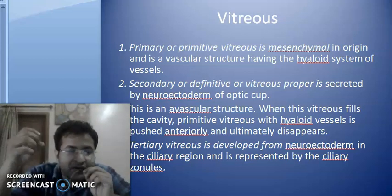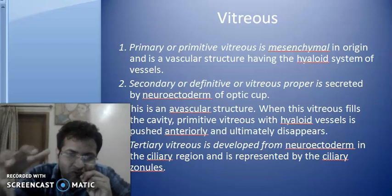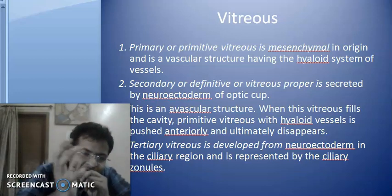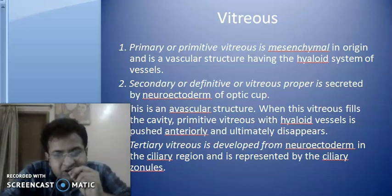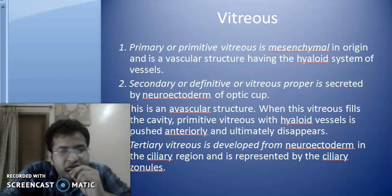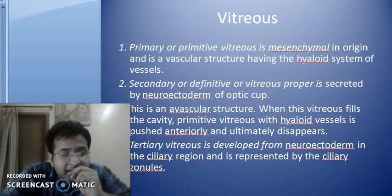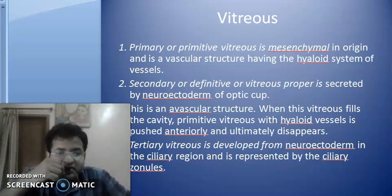The vitreous proper is secreted from the neuroectoderm of the optic cup. It is avascular and fills the whole cavity, and the hyaloid vessels are pushed anteriorly towards the lens and ultimately disappear. What is Tertiary Vitreous? The Tertiary Vitreous is developed from the neuroectoderm of the ciliary region where the ciliary body is present. From there the Tertiary Vitreous is formed and is represented by the ciliary zonules — the zonules which attach the lens to the ciliary body.